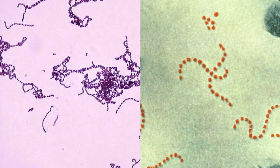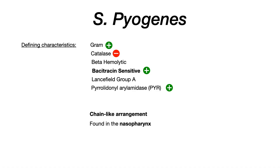If you zoom in on the image, you see it's cocci — spherical — but organized into chains. That's Strep pyogenes. Remember that bacitracin sensitivity is what differentiates Strep pyogenes against Strep agalactiae, which will be the next video.